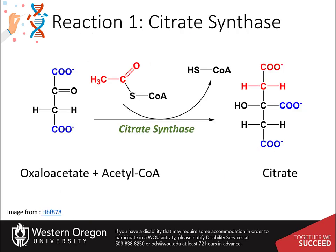The first reaction in the citric acid cycle is the formation of citric acid or citrate from acetyl-CoA and oxaloacetate. Note that the two carboxylic acid groups, shown in blue, originate from the oxaloacetate, while the acetate-derived carboxylic acid group and methyl carbon are shown in red. This will allow you to visualize what happens to these positions throughout the Krebs cycle reactions.